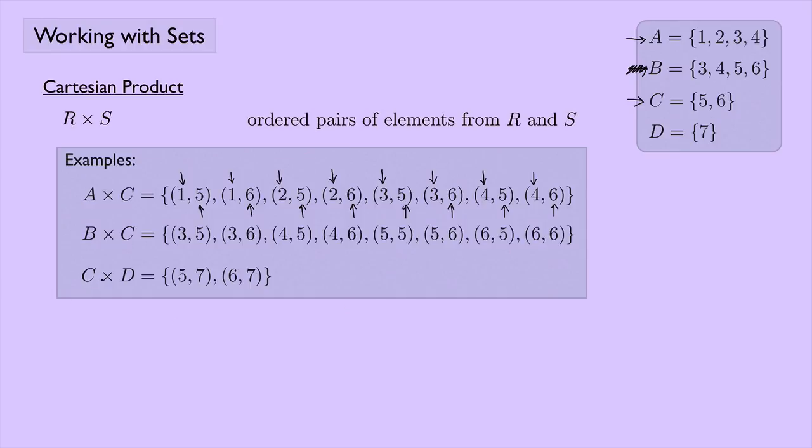And then we have the Cartesian product of C and D. C only has five and six, and D only has seven. So we have five and seven, and six and seven.